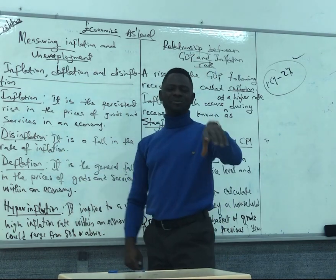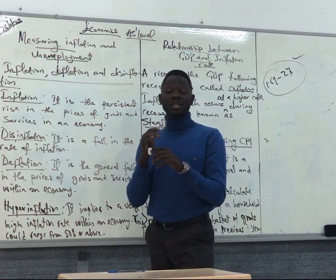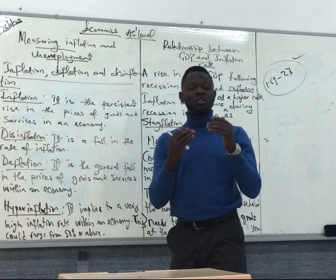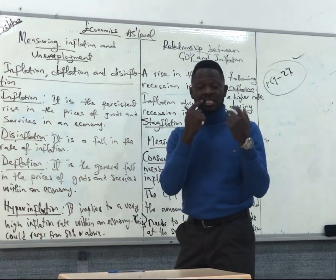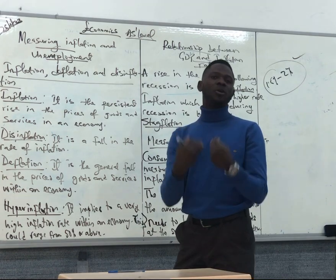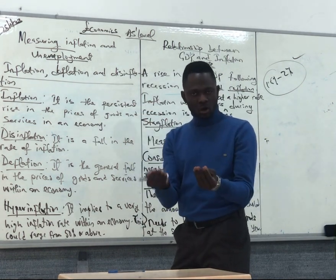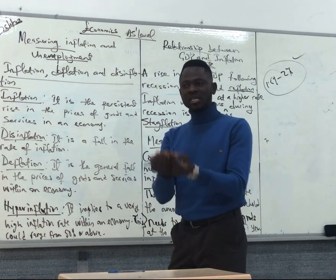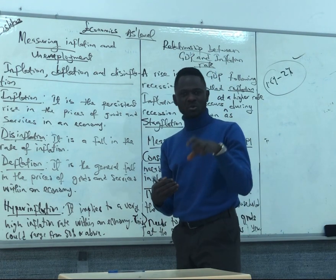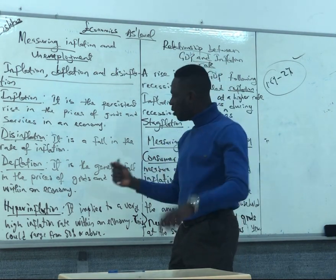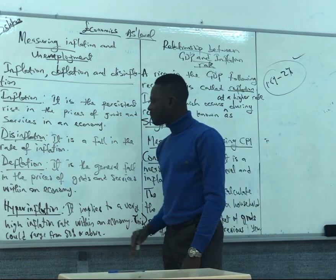Then we have disinflation. What is disinflation? Disinflation means that the inflation rate starts slowing down — so from maybe 7%, it becomes 5%, it becomes 4%. This is what disinflation is about: the fall in the inflation rate.